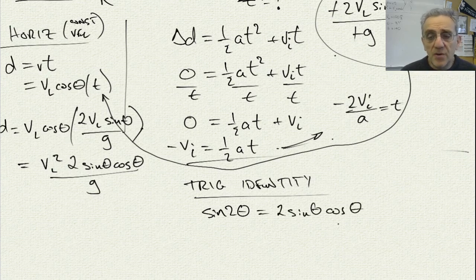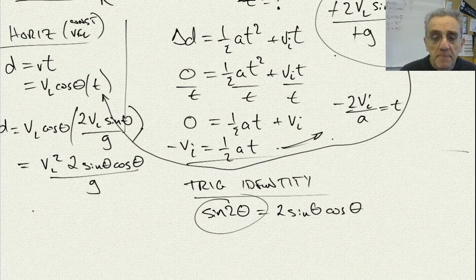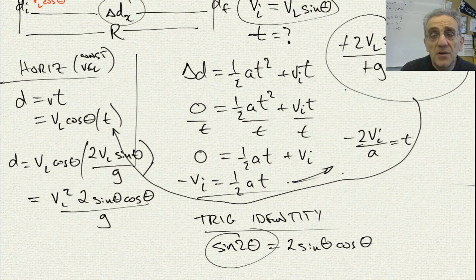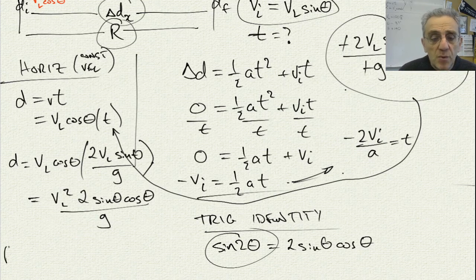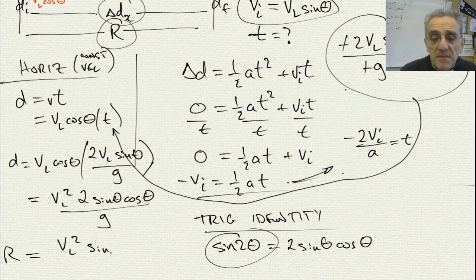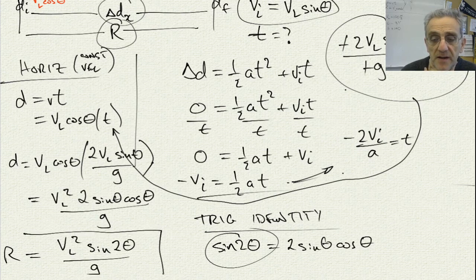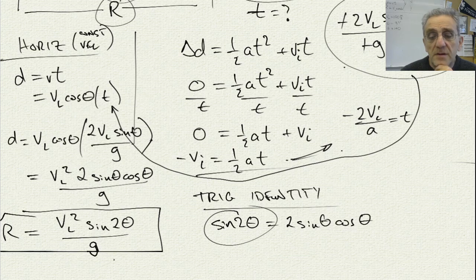The trig identity states that sine 2 theta equals 2 sine theta cosine theta. You can look this up in a trig identity table. So now we can substitute in the simpler form, and replacing D with the preferred variable R for range, we get the range equation: R equals VL squared sine 2 theta divided by G. And there we have our range equation.